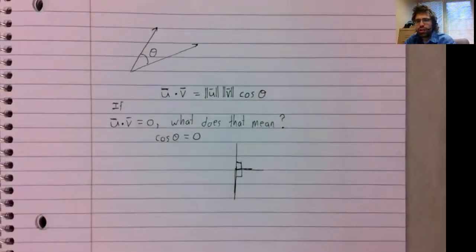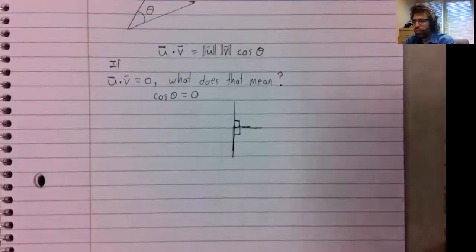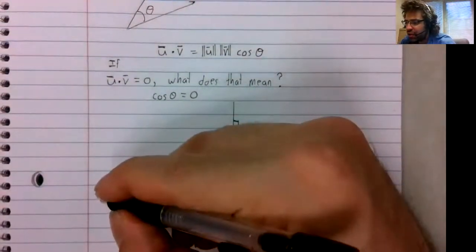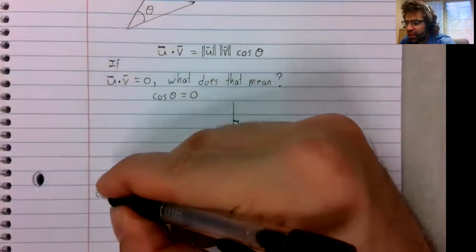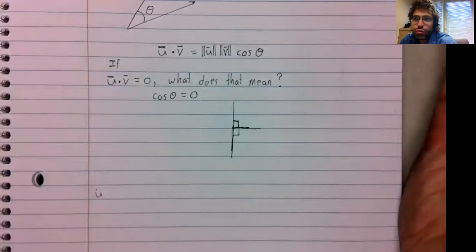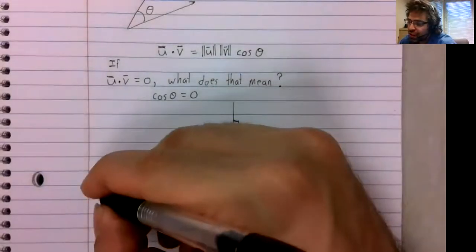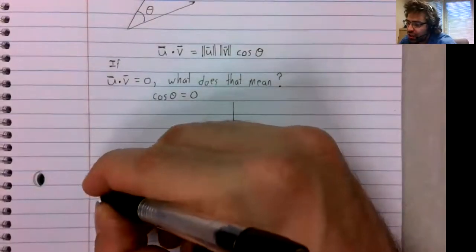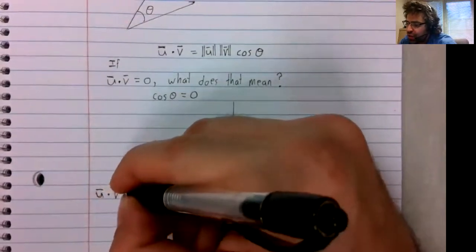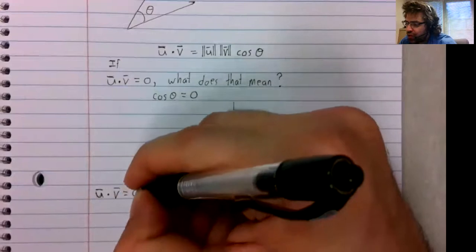So if the dot product is zero, we can informally understand that to mean—I say informally, but it's pretty much true, it's the correct interpretation—that a dot product is zero.